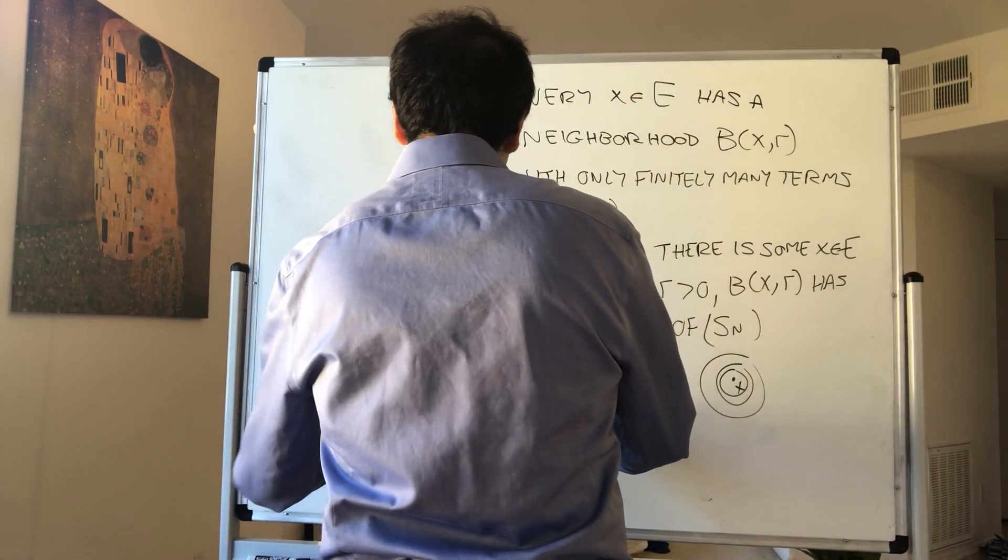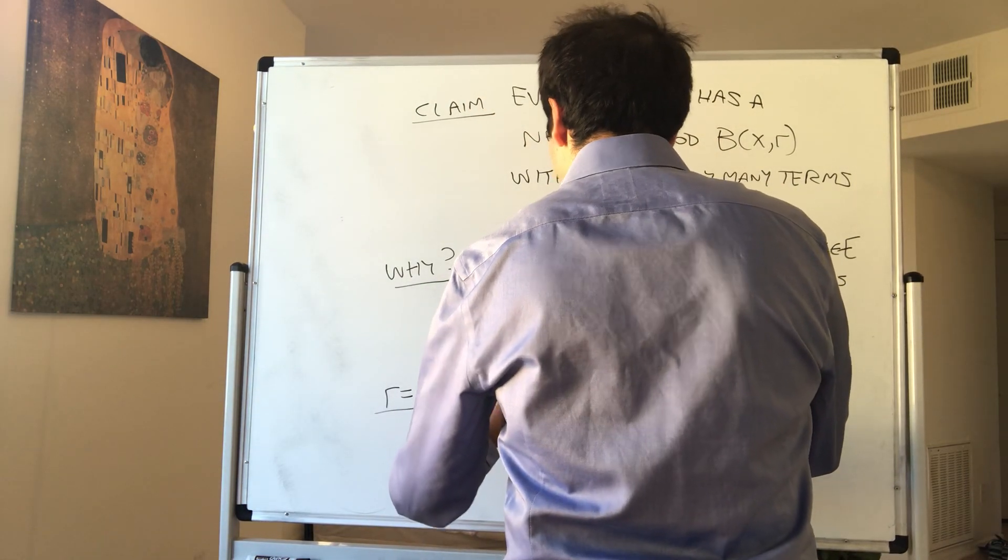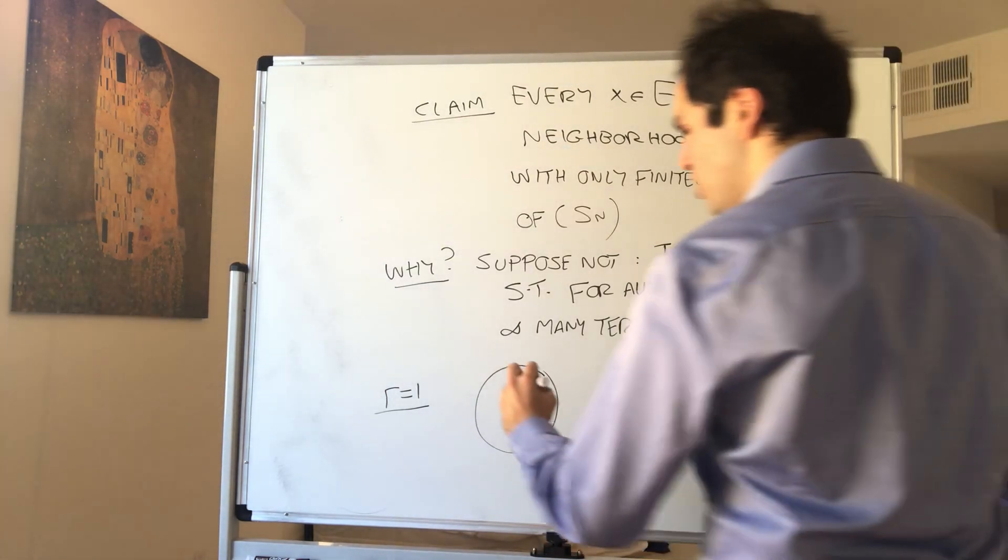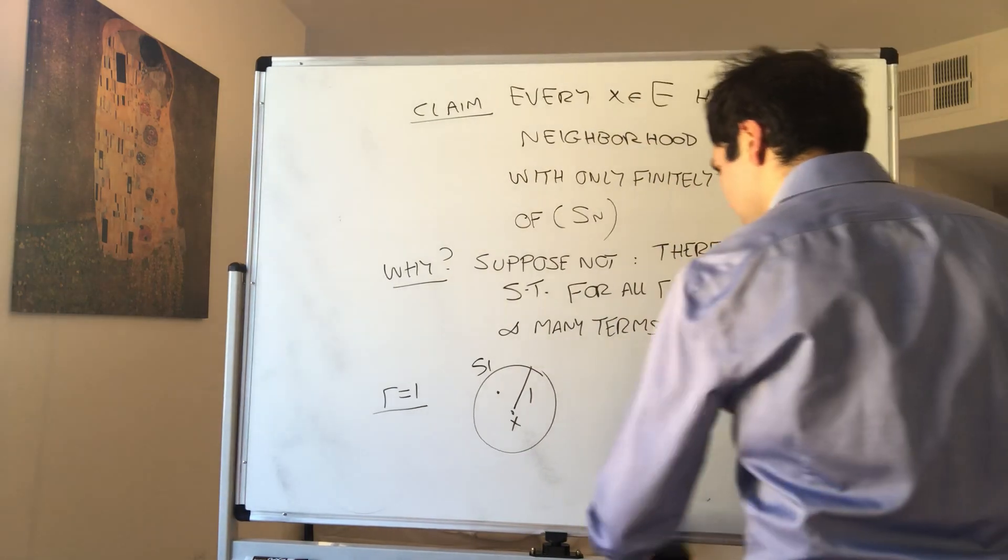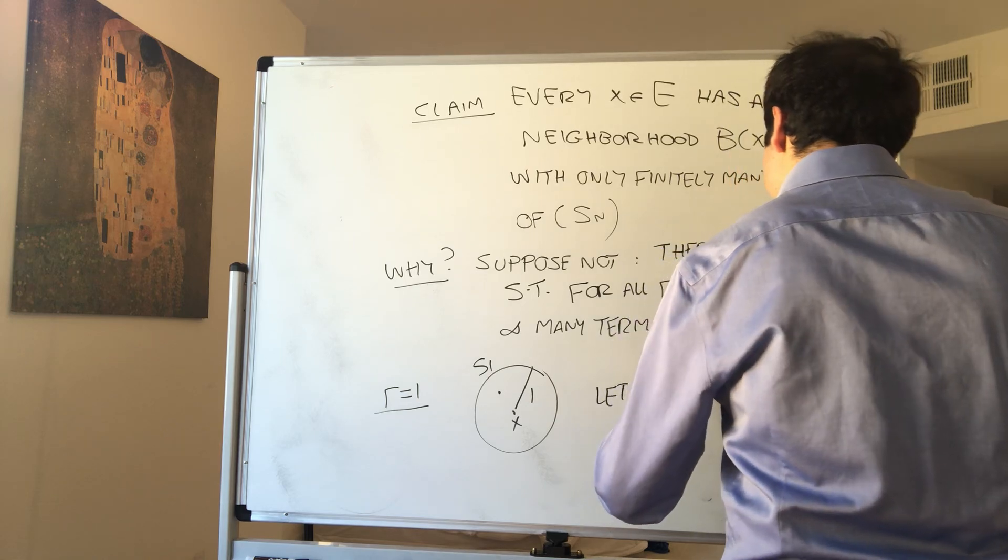Because for R equals 1, what this means is the ball centered at X in radius 1 has infinitely many terms of Sn. So pick one of them. So let Sn1 be in B(X,1).